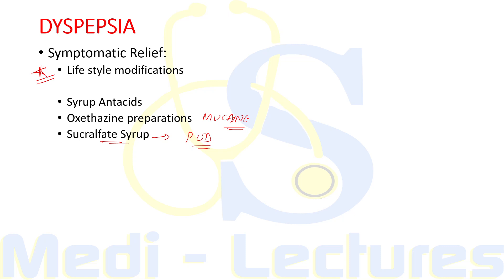We can also advise use of sucralfate syrup, which acts as a gastroprotective agent in patients of peptic ulcer disease. One of the most important aspects of treatment for dyspepsia — be it organic or functional — is lifestyle modification. We ask the patient not to lie down just after eating, to walk for 15 to 20 minutes after any meal, not to take tea or coffee at bedtime, and to elevate the head end of the bed by 15 to 20 degrees. We also ask the patient to lose weight if overweight or obese.